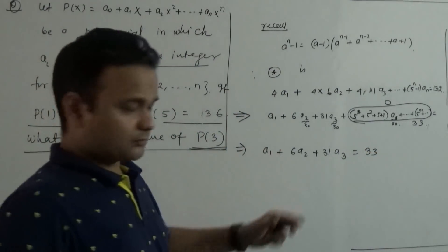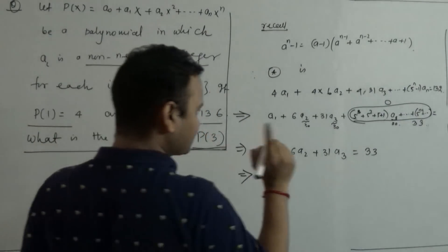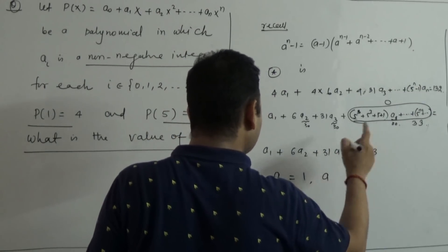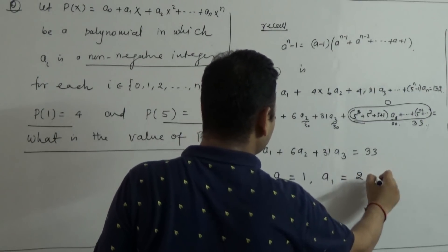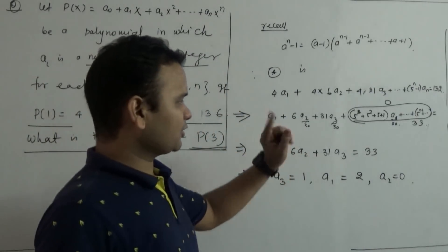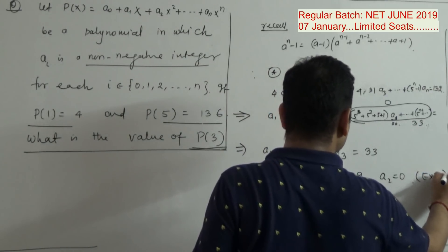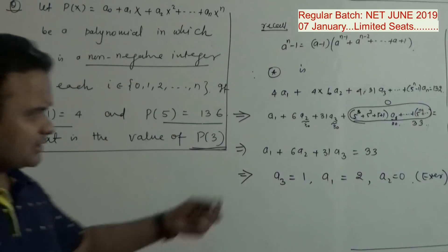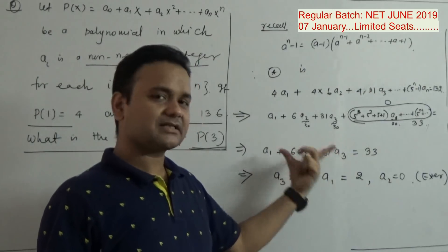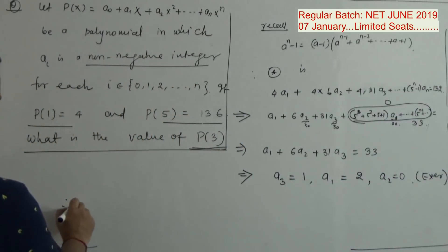Now from here I would like to leave the rest as an exercise — please try this. You should calculate that A_3 must be 1, and when A_3 is 1, A_1 is going to be 2 and A_2 is going to be 0. These are non-negative integers and their weighted sum is 33. Look at how many solutions are possible — it is a simple exercise.